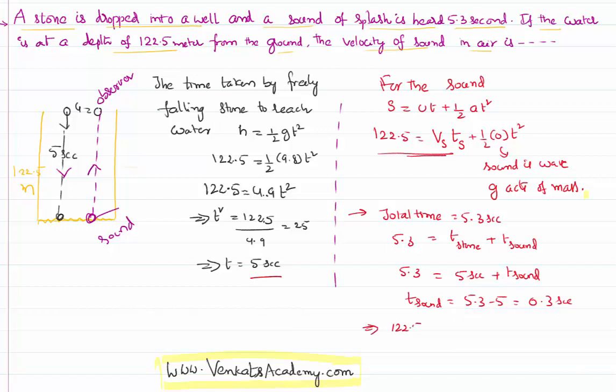Substituting in the equation: 122.5 = velocity × 0.3. This implies the velocity of the sound is 122.5/0.3 = 367 meters per second. So the velocity of the sound in this case is 367 meters per second.